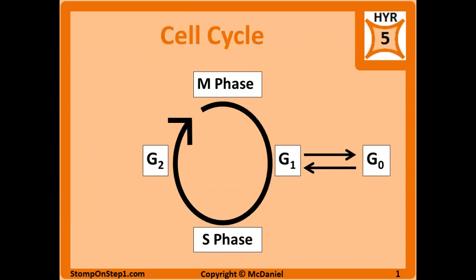The cell cycle is the process of cell replication, where two daughter cells are created from one parent cell. The cell cycle is made up of interphase and mitosis. Interphase is divided into four other phases: the G1 phase, the S phase, the G2 phase, and what I call the lazy phase, the G0 phase.